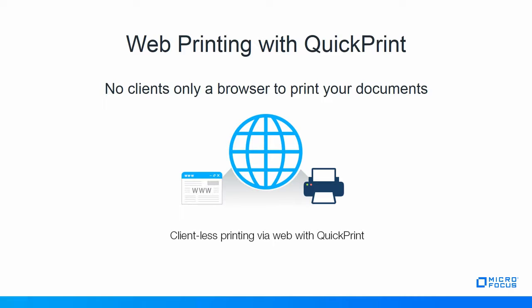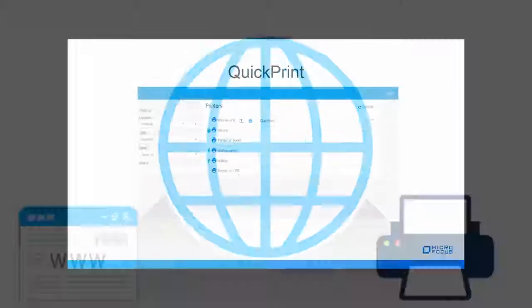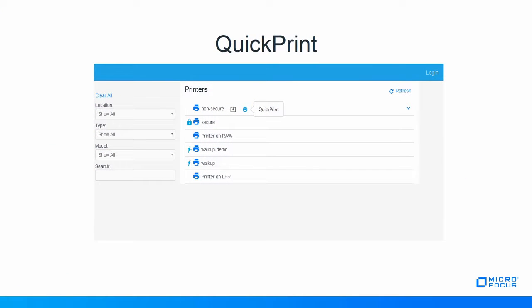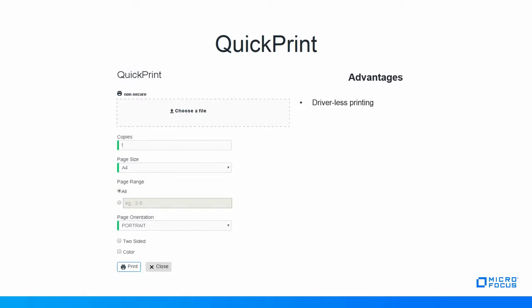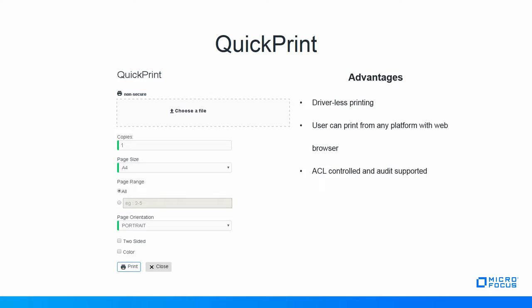The convenience of not having to manage a thick client and driver installations is good enough for big organizations with heterogeneous OS environments. With QuickPrint, which is a web-based printing feature, you no longer require clients or driver installation to print your data. Some of the obvious advantages of QuickPrint are driverless printing, user can print from any platform with a web browser, access-controlled and audit-supported, administrator can enable and disable this feature categorically, and full printer capabilities.